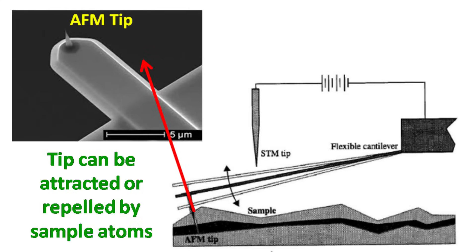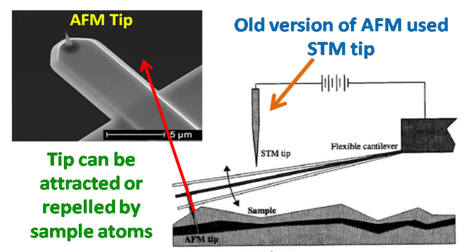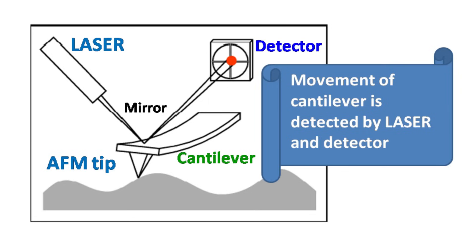The earlier versions of the atomic force microscope employed the use of a scanning tunneling microscope tip which recorded the oscillation of the cantilever based on the tunneling current obtained. However, it was later replaced by a laser and a mirror which would record the oscillation of the tip.